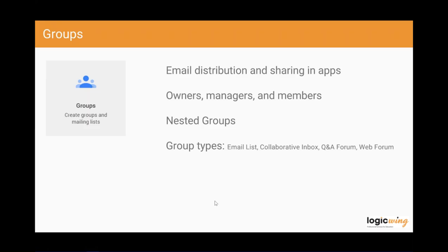There are four different types of groups: the basic email list; a collaborative inbox, helpful as a basic help desk where people post issues and group members can take responsibility for responding; a Q&A forum where folks can post questions and answers accessible via the web; and a web forum, which teachers use for collaborative discussions around a topic in classes. There's also Groups for Business — oddly named given the educational context — which is free to enable, allowing administrators to give teachers the ability to create and manage their own groups.